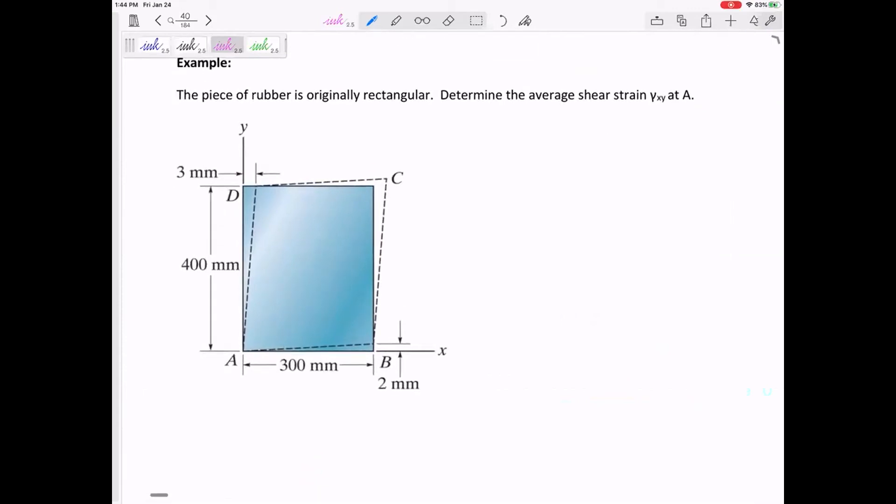Let's do this one. Determine the average shear strain, gamma, at corner A. Now I kind of lied.